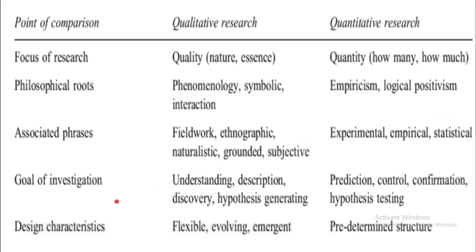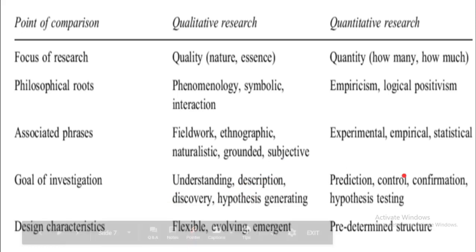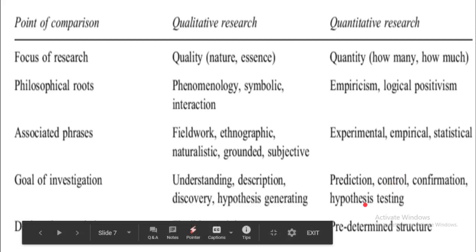Goals of investigation: qualitative research aims for understanding, description, discovery, and hypothesis generating. In quantitative research, you go for predictions, control, confirmation, and hypothesis testing. So the key difference is — qualitative generates hypothesis, while quantitative tests the hypothesis.